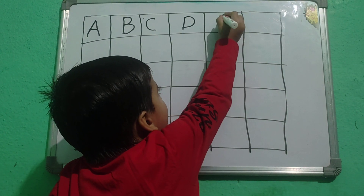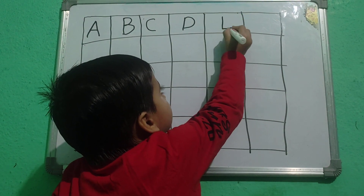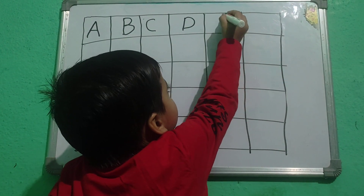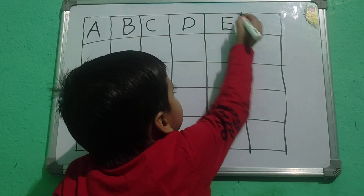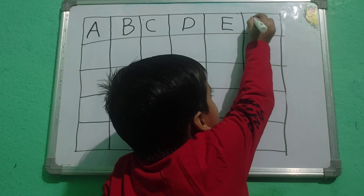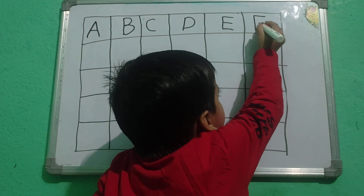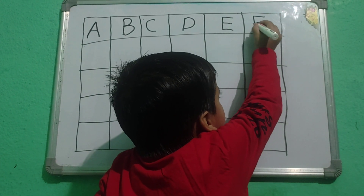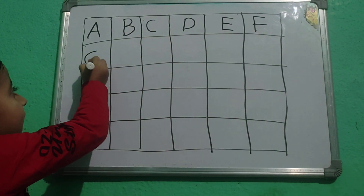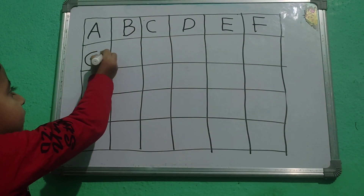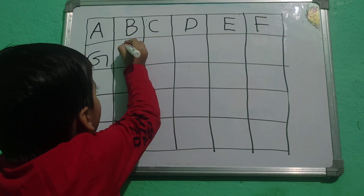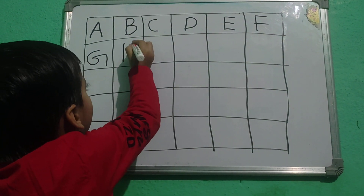E for Elephant. F for Fish. G for Graves. S for Head.